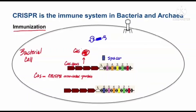Cas stands for CRISPR-associated protein. Now, what happens when the cell is infected by phage? The phage is a virus that injects its DNA into the bacterial cell. That DNA is destined to do its dirty work, but if the bacterial cell survives, it's going to use the Cas system to develop a memory for what happened.